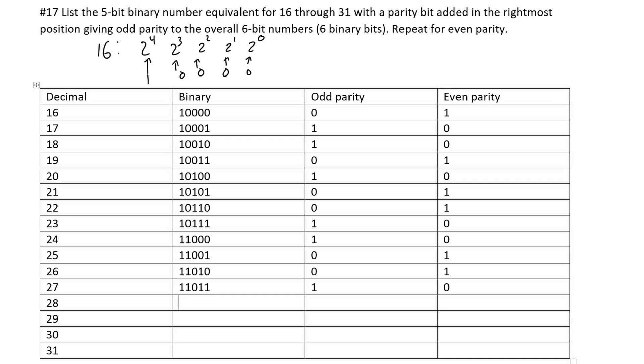28 is just 20 plus 8, so we can look at our 20 (1 0 1 0 0) and write it in here. If we add 8, we're just going to have a 1 in the 2 to the 3rd position, giving 1 1 1 0 0. We have an odd number of ones, so we're going to have a 0 for our odd parity and a 1 for our even parity.